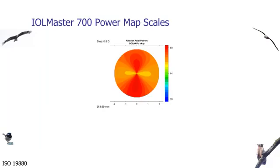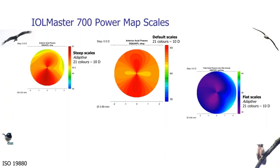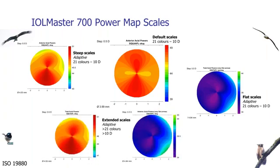This is an example of axial power maps. It has a default scale with 21 color steps. This is what happens for most corneas within the normal range. If the cornea is very steep, the scale will move up keeping 21 colors, 10 diopter scale at half diopter steps. If it's too flat, the scale will move down. For unusual corneas with power spread much more than 10 diopters, we have more than 21 colors in half diopter steps.